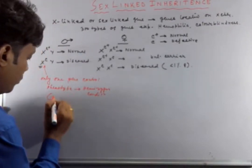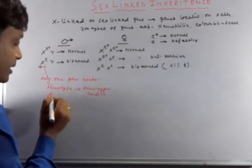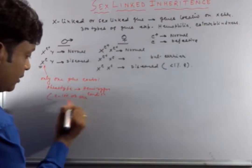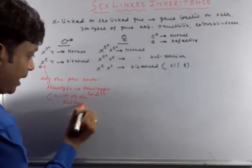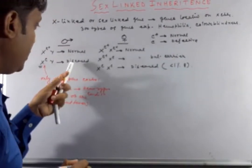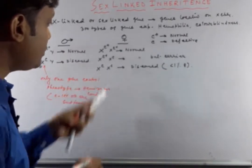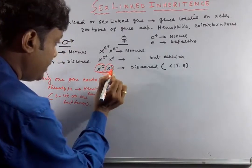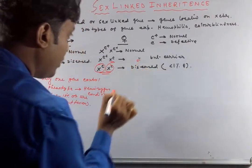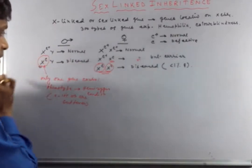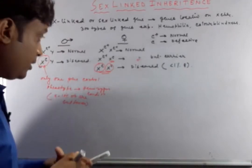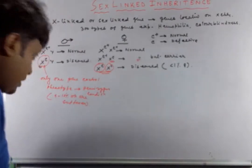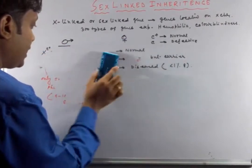Males are actually more affected than females from sex-linked inheritance diseases. About 5 to 10 percent of males are affected because only one gene is sufficient for the disease. In cases of females, two mutant genes are required. But in cases of males, only one gene controls the phenotypic character. So males are more affected than females in sex-linked inheritance, because the male shows the hemizygous condition.